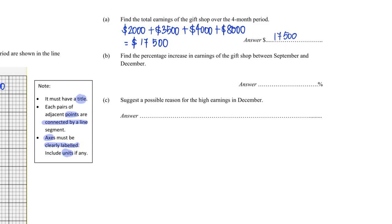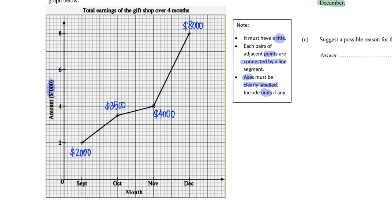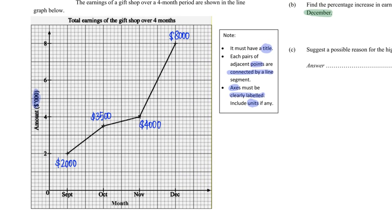Find the percentage increase between September and December. So again, let's go back to the graph for September and December. September two thousand, December eight thousand.